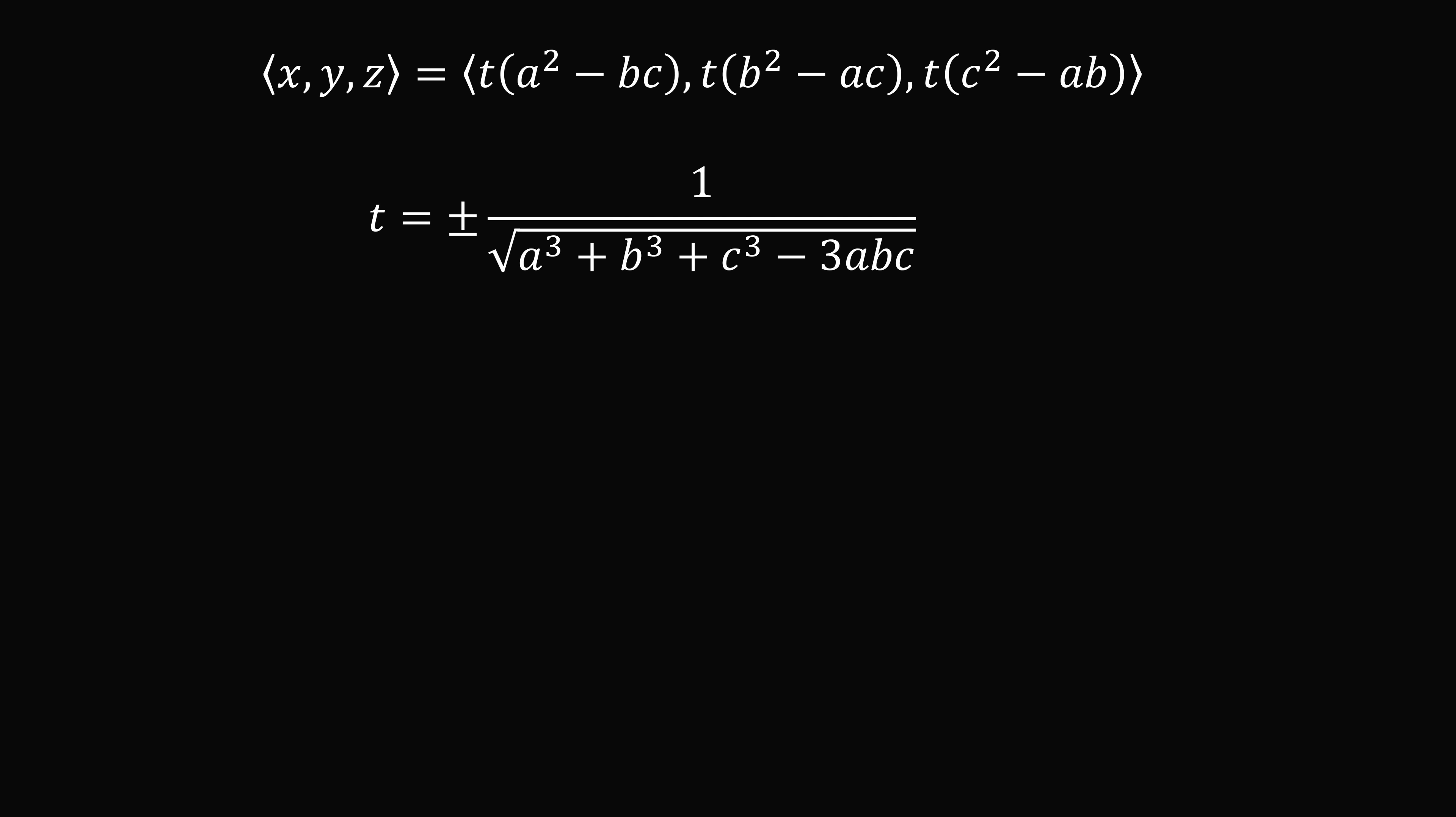We pretty much solved the problem now. We figured out what x, y, and z are equal to in terms of a, b, and c. We'll just write it in one more way. The triple (x, y, z) is equal to the following triple. How does this work out?